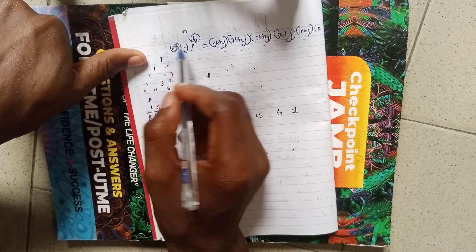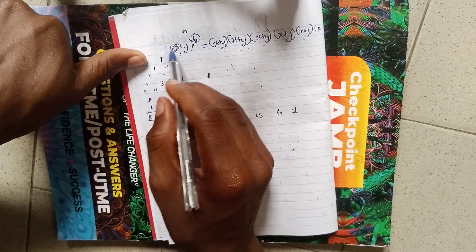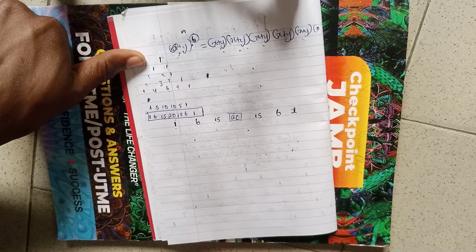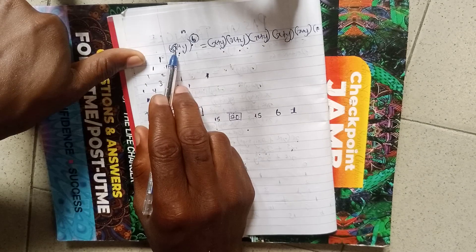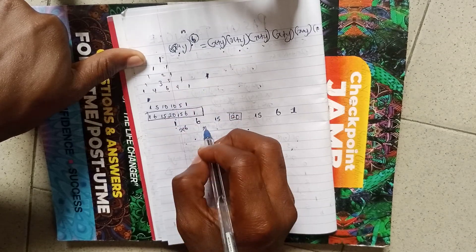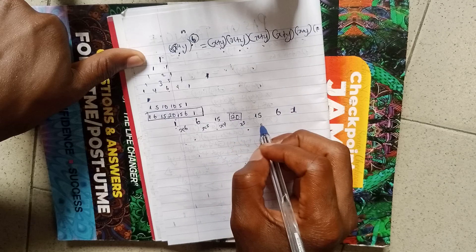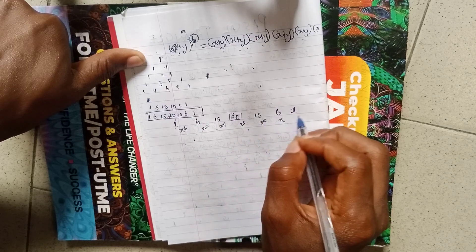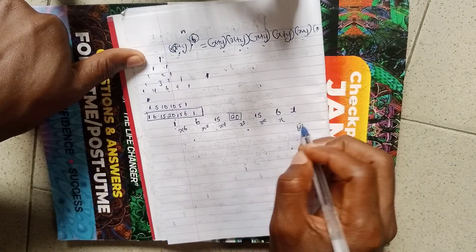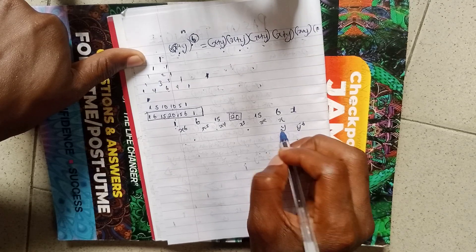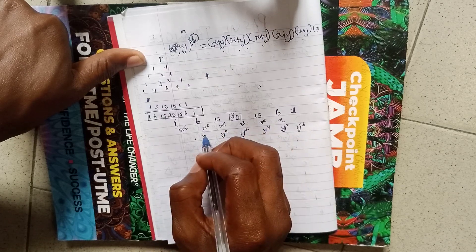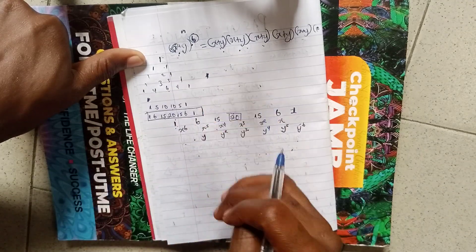You will write the first term starting with n equal to six in decreasing power from the left. So you write x^6, x^5, x^4, x^3, x^2, x. You then write the second member from here going this way in increasing power: y, y^2, y^3, y^4, y^5, y^6.